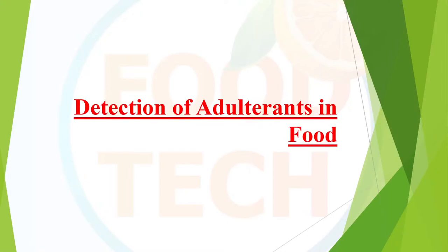Hello friends. Today the topic I have brought for you is the detection of food adulteration. Adulteration is a very common thing which is mostly practiced everywhere, be it in the food industry or any other industry. In the food sector specifically, adulteration is one of the worst enemies of the entire sector and the food industry, and especially it puts the lives of human beings at stake.